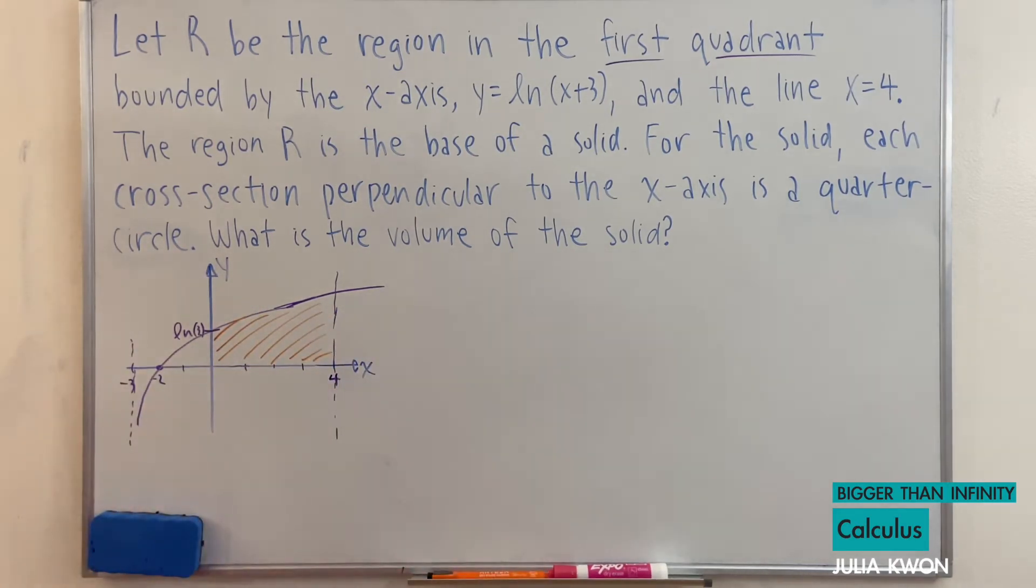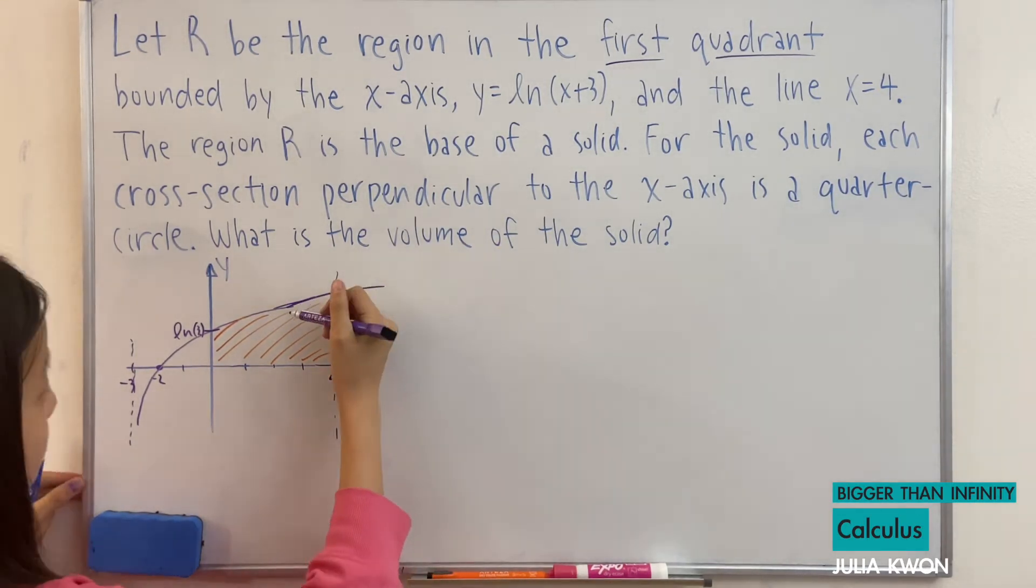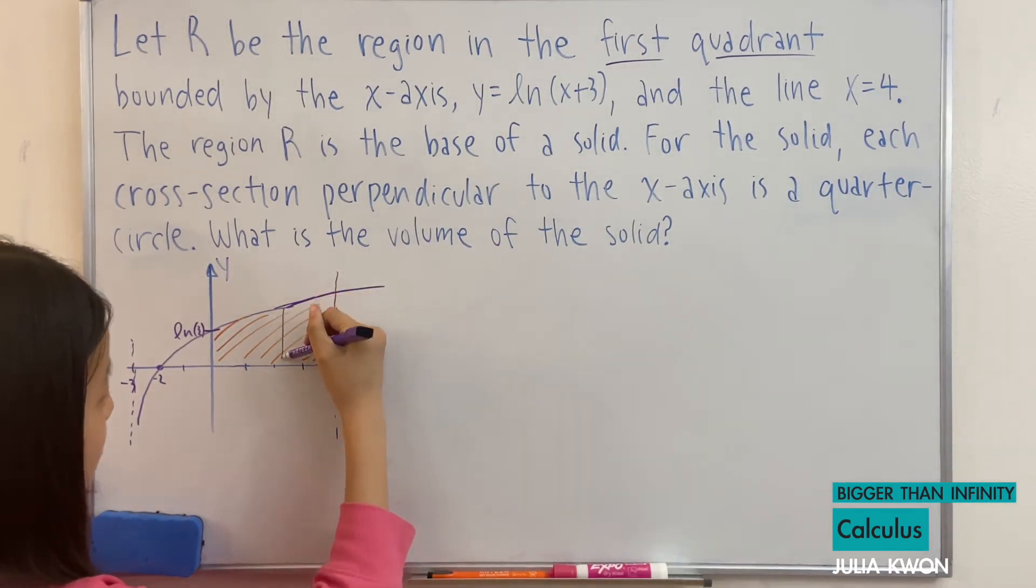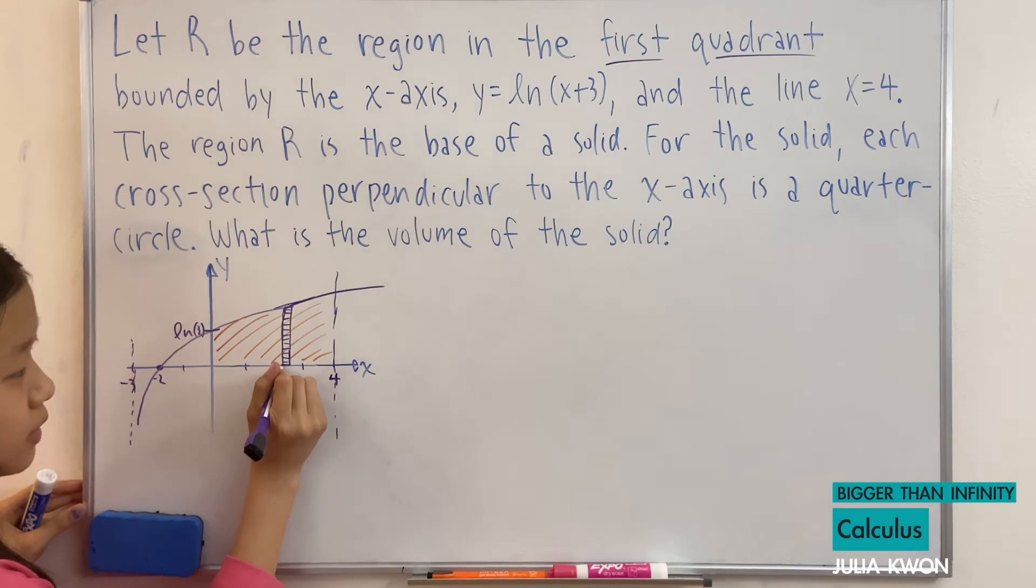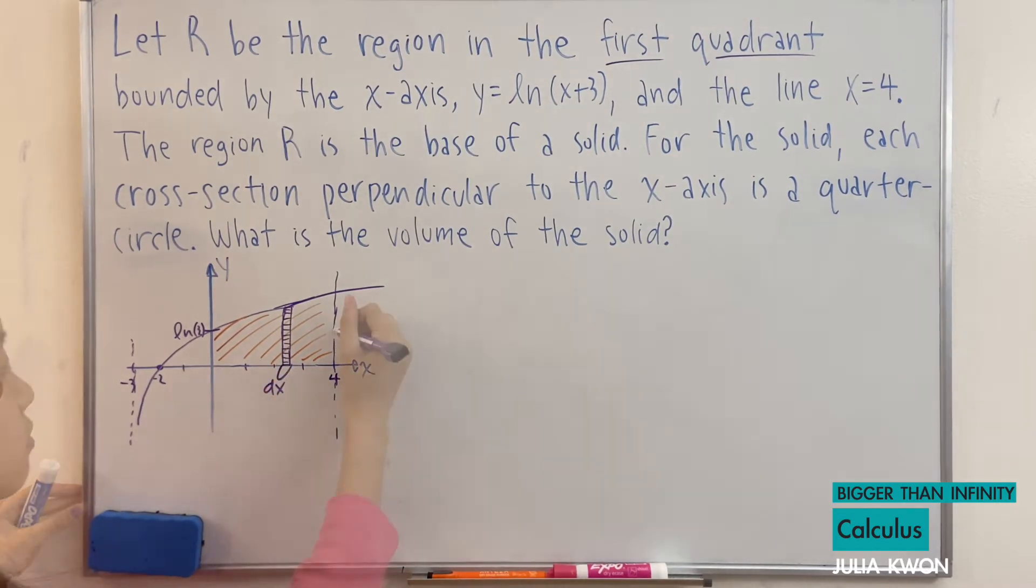Also for the solid, each cross-section perpendicular to the x-axis is a quarter circle. So since it's perpendicular to the x-axis, it would be parallel to the y-axis. So I'll draw something like this here. And this length here on the bottom would be dx.